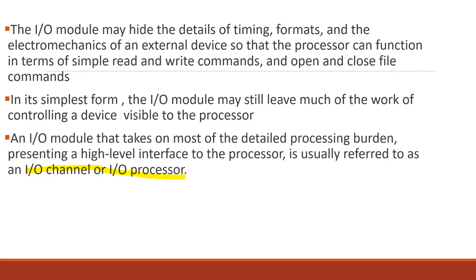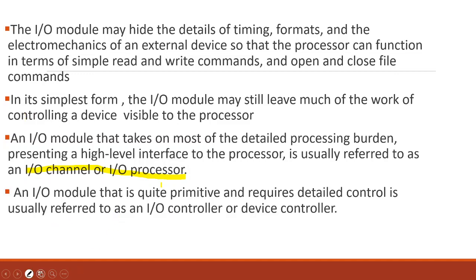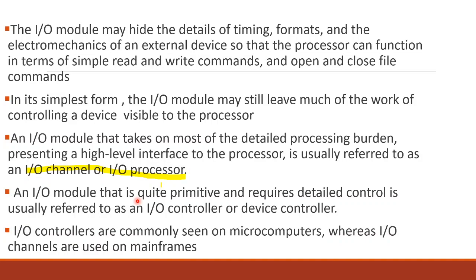When the IO module takes on most of the detailed processing burden and presents a high-level interface to the processor, it is usually referred to as an IO channel or IO processor — just simple read/write and open/close commands. When the IO module is more primitive and requires detailed control, it is referred to as an IO controller or device controller. IO controllers are commonly seen on microcomputers, whereas IO channels are used in mainframes.